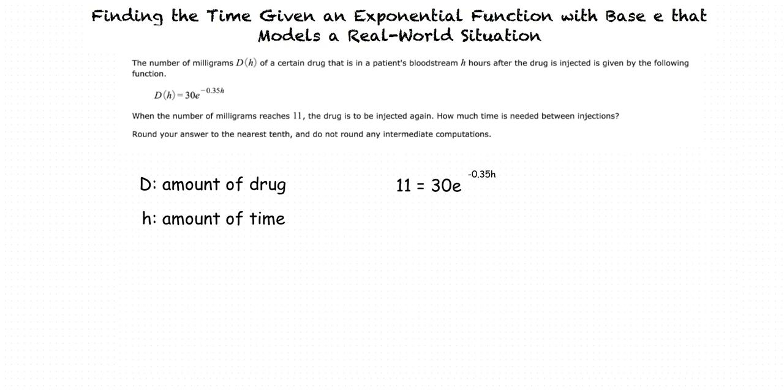Like we said earlier, we are trying to solve for H. First, we can divide both sides by 30 to get 11 over 30 equals E to the negative 0.35H.